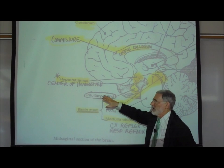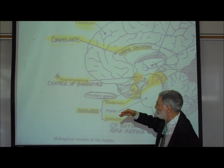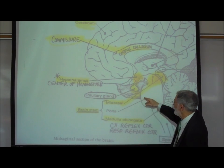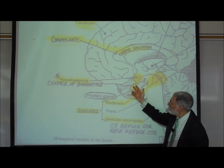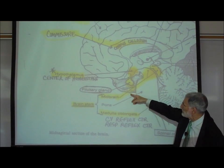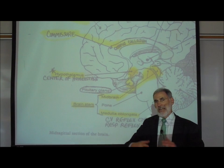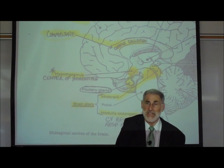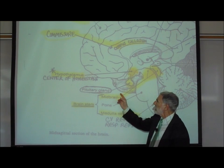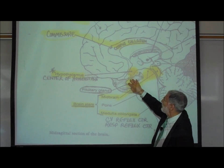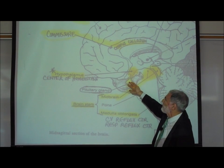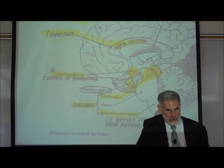Attached to the hypothalamus is the pituitary gland, the master endocrine gland of the body. As we will be learning, the hypothalamus also is in control of the release of hormones by the pituitary gland.